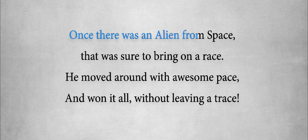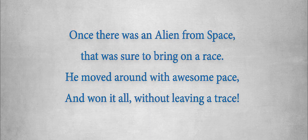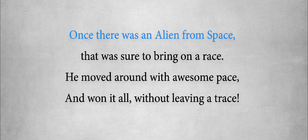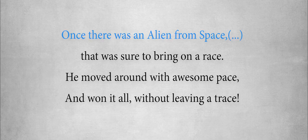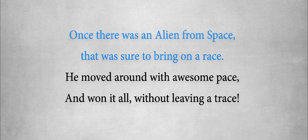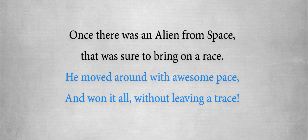Say we have this short poem: 'Once there was an alien from space that was sure to bring on a race. He moved around with awesome pace and won it all without leaving a trace.' The first sentence, 'once there was an alien from space,' is not finished, and we feel it has to be followed by the rest. The second line comes to a rest, and we know the sentence is finished. The same goes for the next two sentences. This is exactly what happens in music — some musical phrases end and others have the need to go on. We call this phenomenon the cadence.